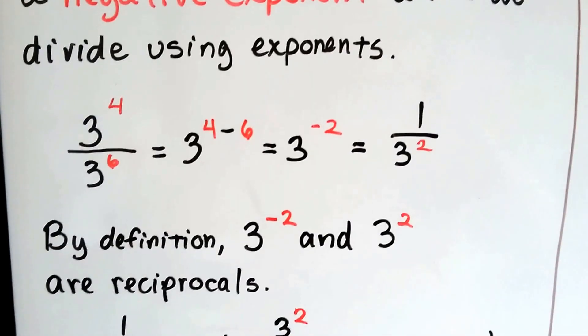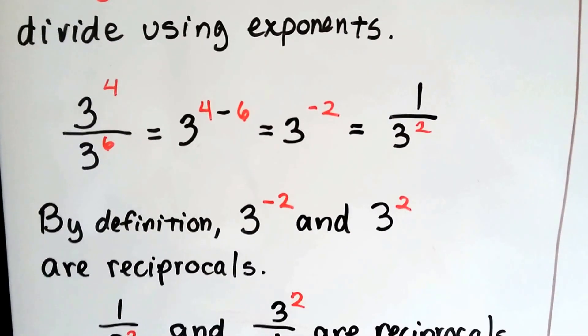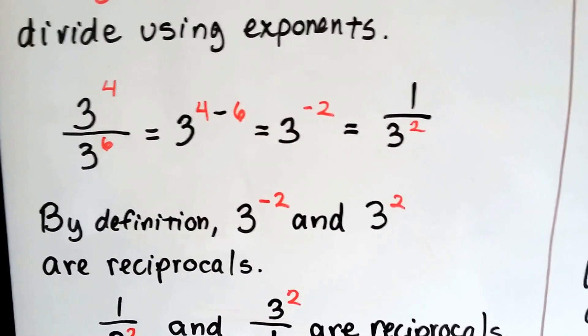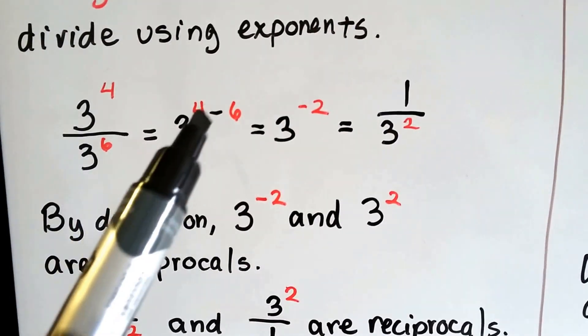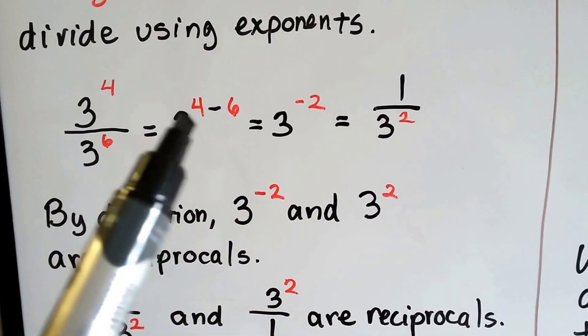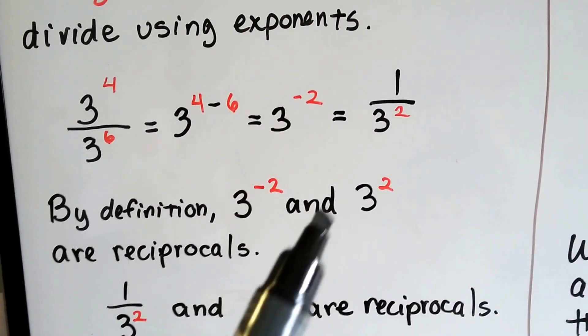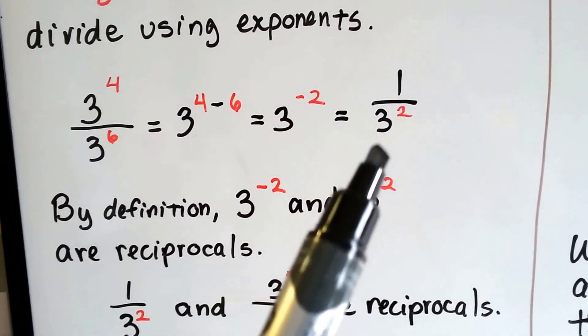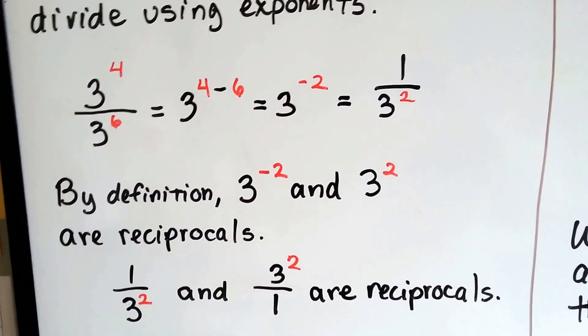We subtract when we divide. So, if we have 3 to the fourth power over 3 to the sixth power, that gives us 3 to the 4 minus 6. That's going to be 3 to the negative 2, because 6 is so big. And we write it as a fraction, 1 over 3 to the second power.